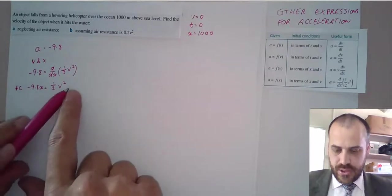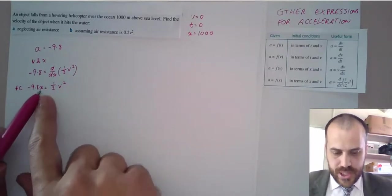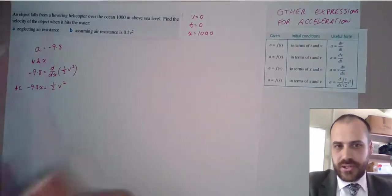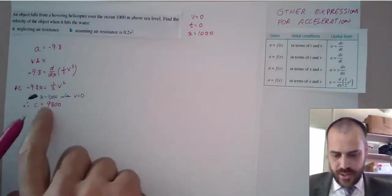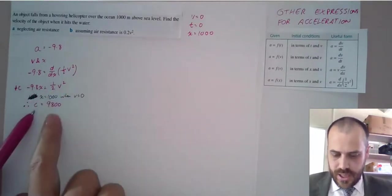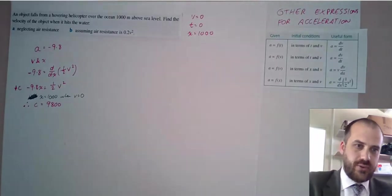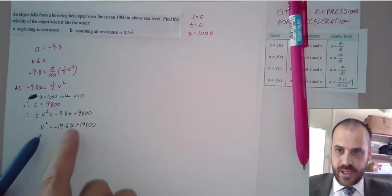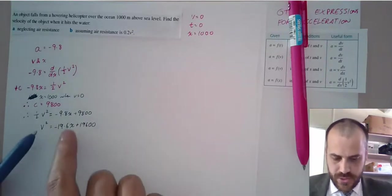Well, we know the initial velocity was zero. We know the initial displacement was 1,000 meters above the C level. So we can figure out what C is relatively easy. Jumping through steps fast here. When X equals 1,000, V equals zero, sub it into that and C will be 9,800. All right, we've worked hard here. We now have an equation in terms of V and X.